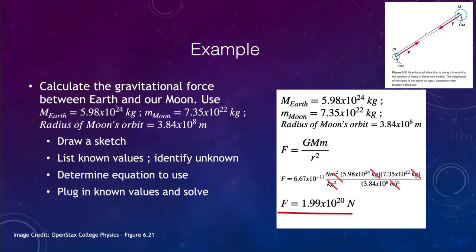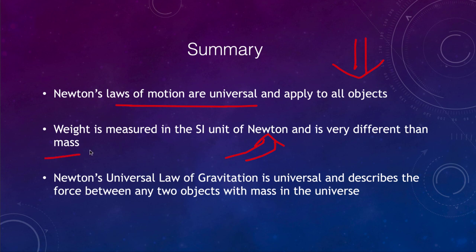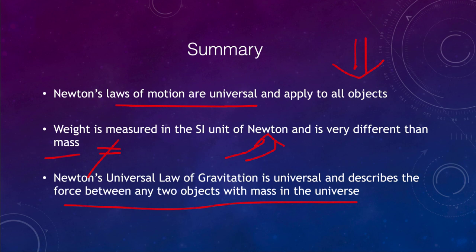To summarize: Newton's laws of motion are universal and apply to all objects. Weight is measured in Newtons and is very different from mass — weight and mass are not equal to each other. We also looked at Newton's universal law of gravitation as a way of describing the force between any two objects with mass in the universe — every object pulls on every other object. That concludes this lecture on Newton's laws of motion and gravity. We'll be back next time for another topic in physical science. Have a great day, everyone, and I will see you in class.